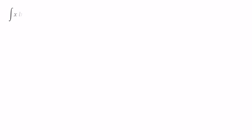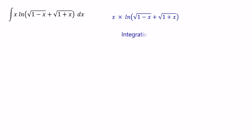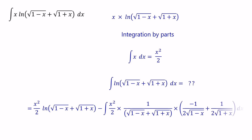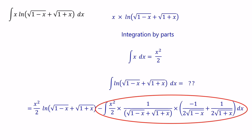Before we start, let's think about how we can solve this question. Here we have the product of x·ln(√(1-x) + √(1+x)). We can apply the integration by parts method. We know the integral of the x term is x²/2, but there is no direct equation for the integral of ln(√(1-x) + √(1+x)). Therefore, we can prioritize the x term for integration. Then we need to find the integral of the product of x²/2 and the differentiation of ln(√(1-x) + √(1+x)), and using basic equations we can simplify this integral. Let's jump into the question.